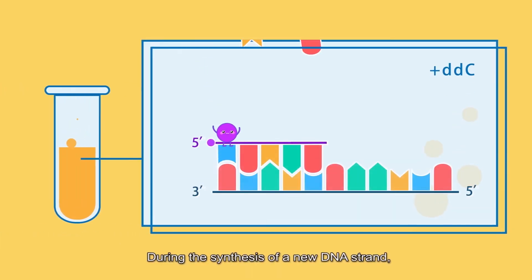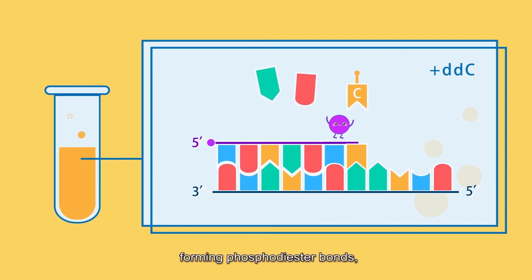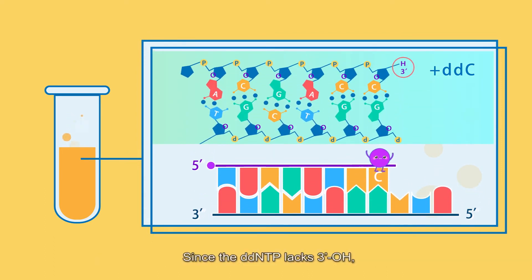During the synthesis of a new DNA strand, the five prime end of the dNTPs will be added to the three prime OH of the primers, forming phosphodiester bonds, and this addition carries out until a ddNTP is encountered. Since the ddNTP lacks three prime OH, it cannot continue to bond with the next nucleotides, and the elongation of the DNA cannot proceed.